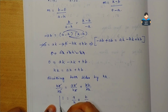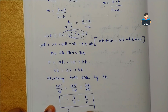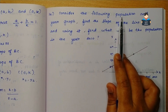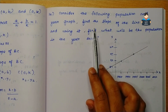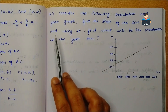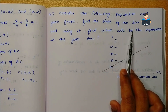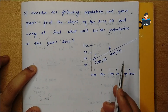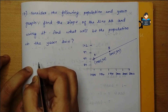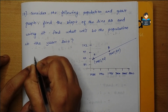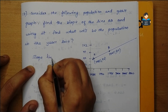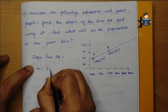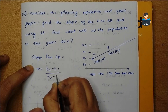Hence proved. Now the 14th question: Consider the following population and year graph. Find the slope of the line AB, and using it, find what will be the population in the year 2010. So, slope of line AB: m is equal to y2 minus y1 by x2 minus x1.